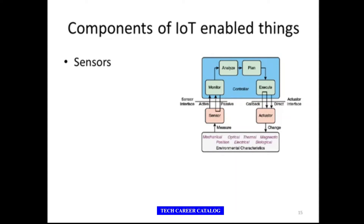We also have the actuator, which gives you the action in return — the sensor takes the input, the actuator gives you the output. There are various types of sensors like positioning, proximity, motion, inertial devices, pressure, optical devices, image, camera, magnetic devices, media devices, temperature, and specialized sensors.